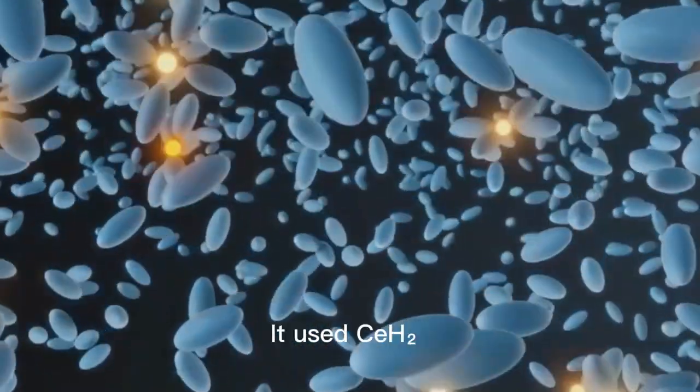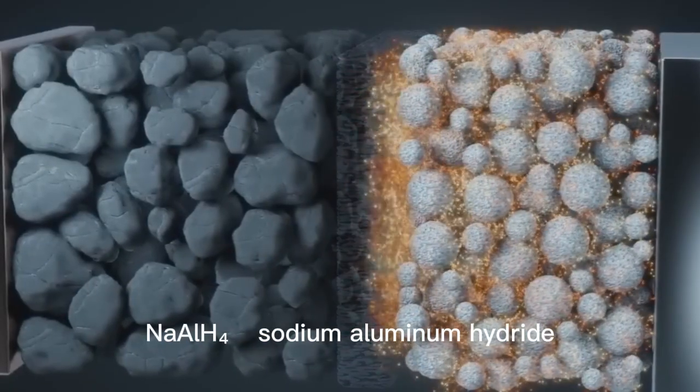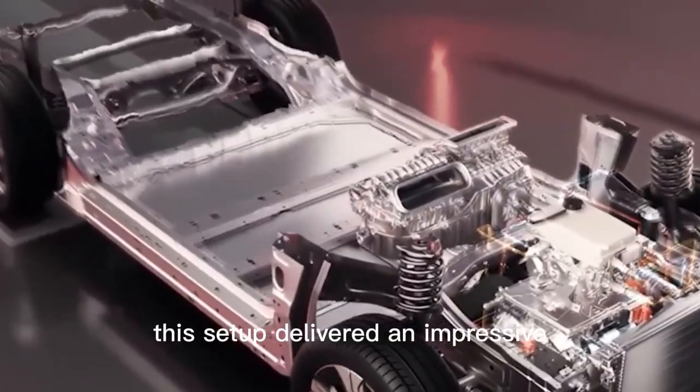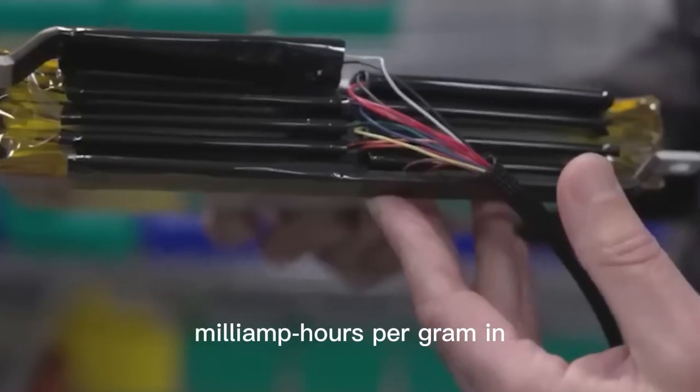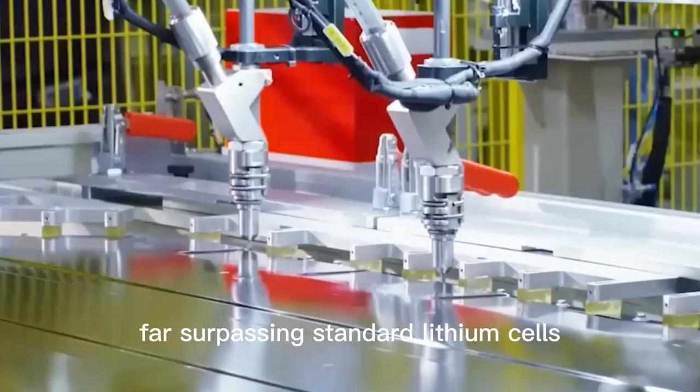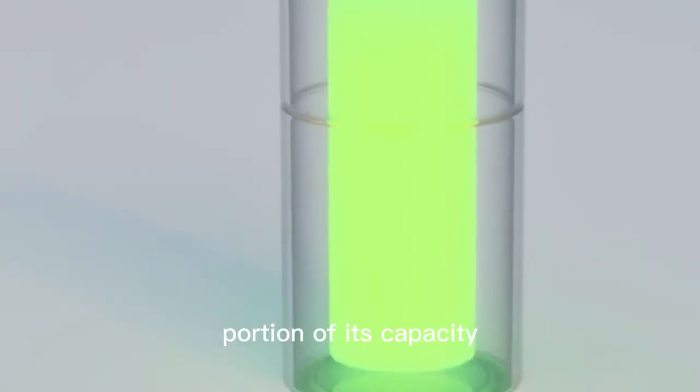It used CeH2 as the negative electrode and NaAlH4, sodium-aluminum hydride, as the positive one. In lab tests, this setup delivered an impressive 984 milliamp hours per gram in its first cycle, far surpassing standard lithium cells. Even after multiple charges, it retained a significant portion of its capacity.